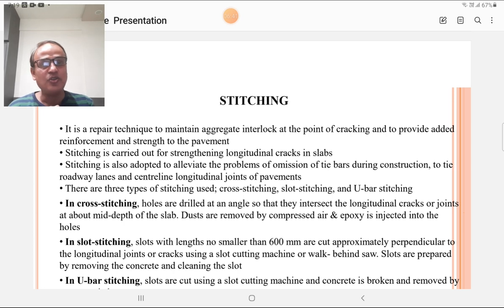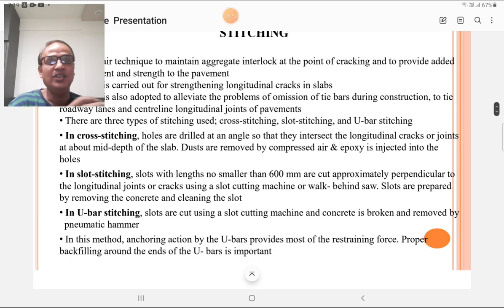In slot stitching, slots with length no smaller than 600 mm are cut approximately perpendicular to the longitudinal joints or cracks using a slot cutting machine or walk-behind saw. Slots are prepared by removing the concrete and cleaning the slots. In U-bar stitching, slots are cut by using slot cutting machine and concrete is broken and removed by pneumatic hammer. In this method, anchoring action by the U-bar provides most of the restraining force. Proper backfilling around the ends of U-bar is important.